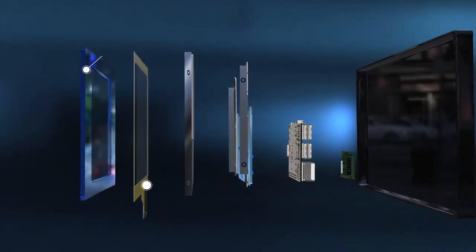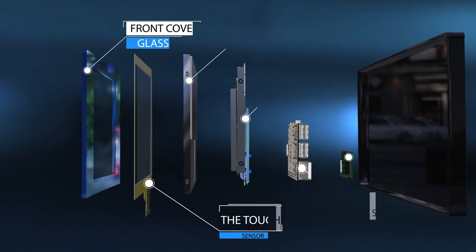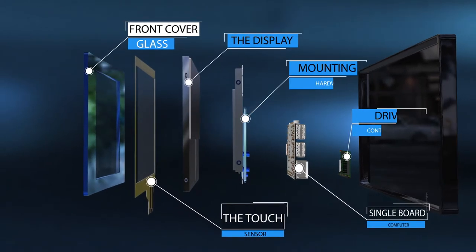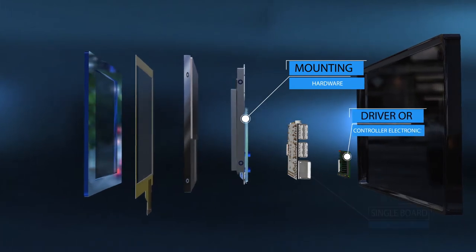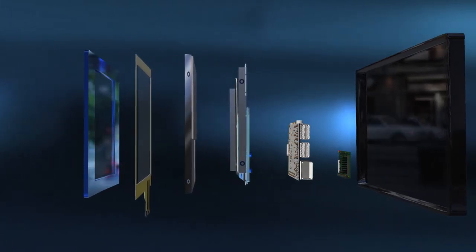The key components of a typical display system are the front cover glass, the touch sensor, the display, mounting hardware, and single board computer or controller electronics.